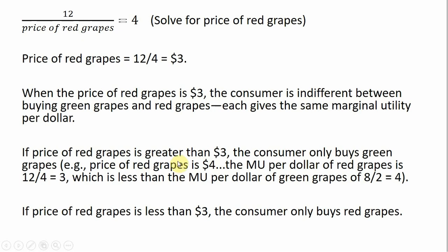What happens if the price of red grapes is greater than $3? Buying red grapes is not a good deal for the consumer — the consumer will only buy green grapes. For example, if the price of red grapes is $4, the marginal utility per dollar of red grapes is 12 divided by 4, which is 3. This is less than the marginal utility per dollar for green grapes, which is 4. So if the price of red grapes is greater than $3, the consumer will not buy any red grapes — the quantity demanded of red grapes is zero.